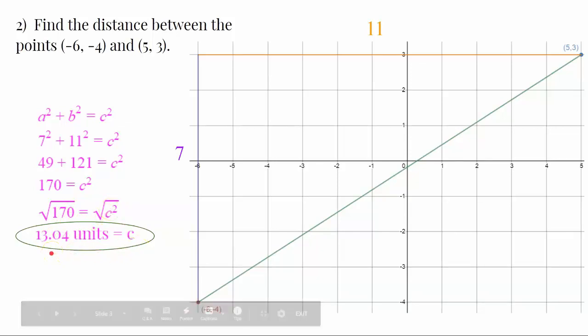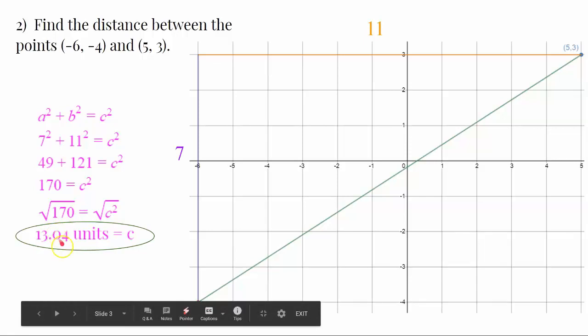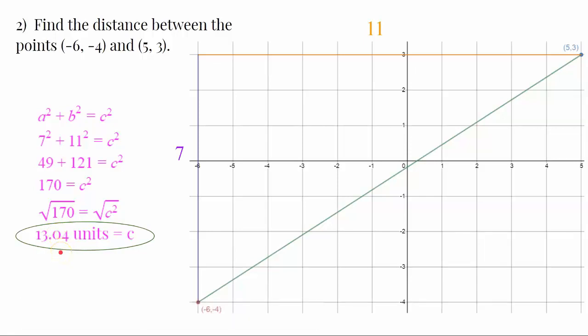This time, I rounded to the nearest hundredth because there was an insignificant digit here. And it didn't specify what to round to. So, if it specified to round to the nearest tenth, I would have answered 13.0. If that's what you answered, I would accept that as an answer.